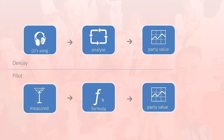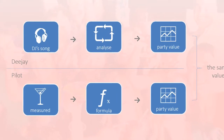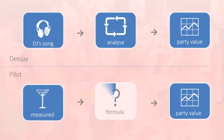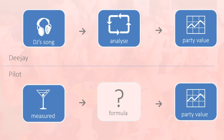The amount of drinks were measured and several formulae were written to output a certain party value. The goal was to output the same value, because then Pilot would be able to select music with a desirable party probability. Unfortunately, this algorithm could not be found in the time available.